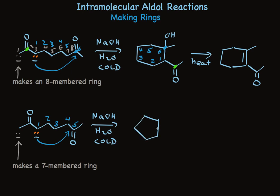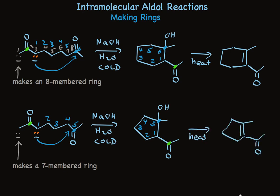So we see good yields of the aldol product form. If we track the two carbonyl carbons, this one ends up as the carbonyl here, and we'll make this one blue, and it ends up with the hydroxyl group on it. When we number in the same way we did on the starting material, these are the way the carbons end up. Again, simple heating causes dehydration.